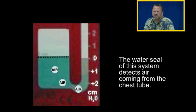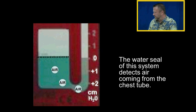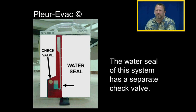The water seal on this system detects air coming from the chest tube because they use a different check valve. So here our water seal does not function as a check valve. They have a separate check valve. Nowadays they'll call this the air leak indicator instead of the water seal.